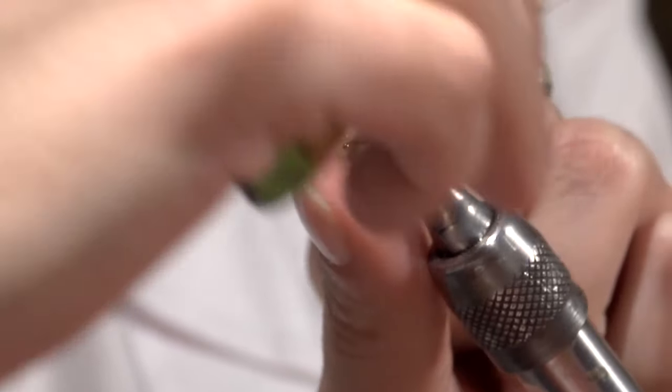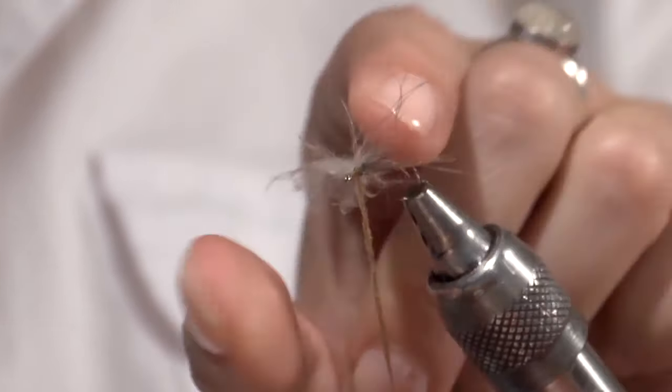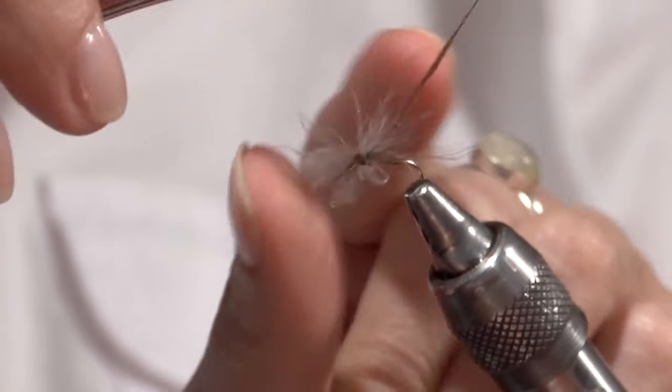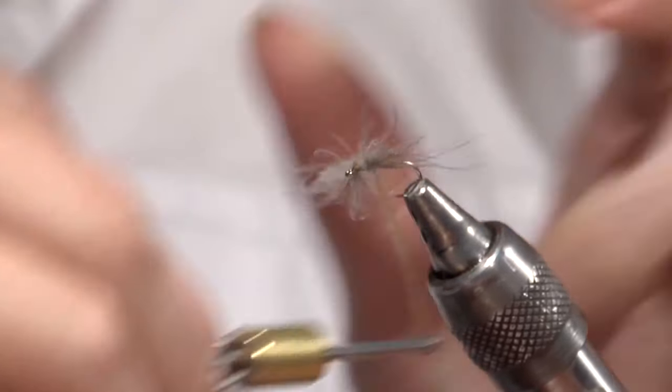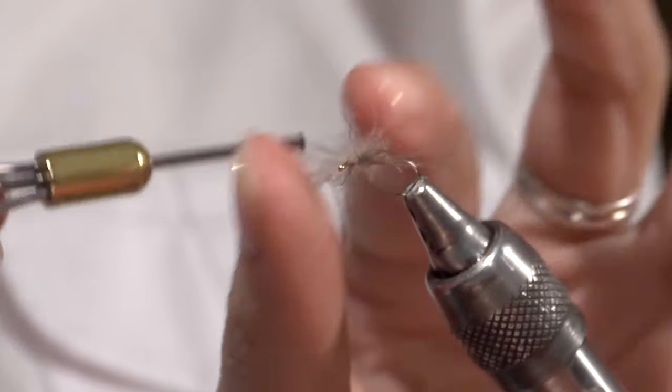And again, in the figure eight style, we come in between the wings, across and down, making a good thorax.